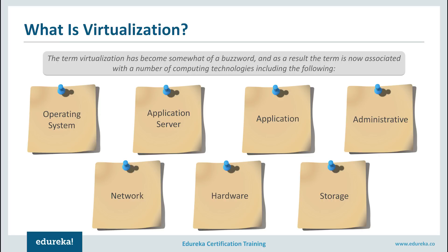Then there is application virtualization, which is different from application server virtualization — people normally confuse these two. In application virtualization, you have the feeling that you are running an application on your local device, but it is actually running on a server somewhere else and you get that feel locally. Then there is administrative virtualization, used in data centers. Different groups exchange resources or are given access rights like read and write. You virtualize different environments for different groups and set access rights accordingly.